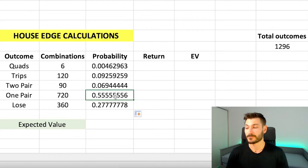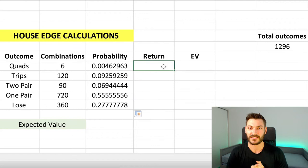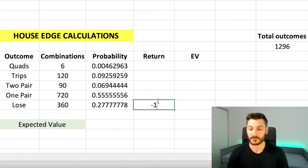Alright. So the return column. This is where we get to start tinkering around with some values for the player to win or to lose. I recommend that you always start with a bet of $1. Reason being, if you start with a bet of $1, it's very easy to scale up to bigger bets. So if they bet $7 or $32, you can just multiply the return by that value. So I'm going to start with lose. If they bet a dollar and they don't get any of the above outcomes, they are going to lose that $1. So I'm going to type in minus one.